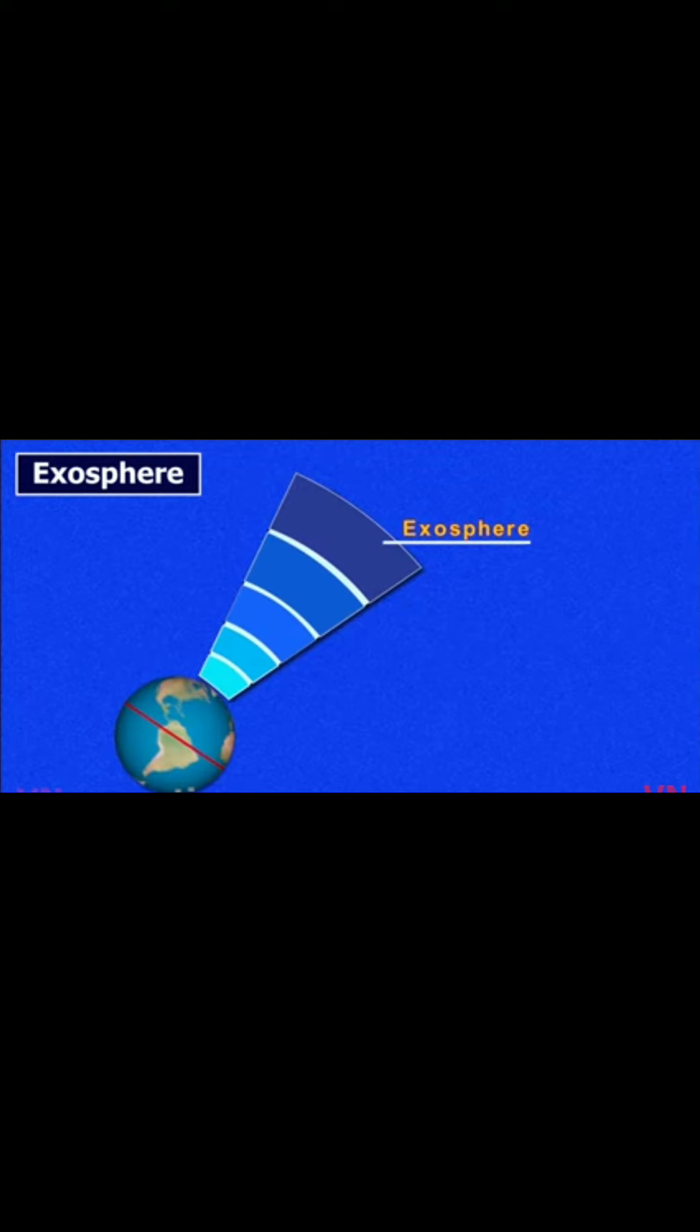The density in the exosphere becomes extremely low and is in a rarefied form. It does not contain much oxygen because the lack of gravity allows gas molecules to escape into space.